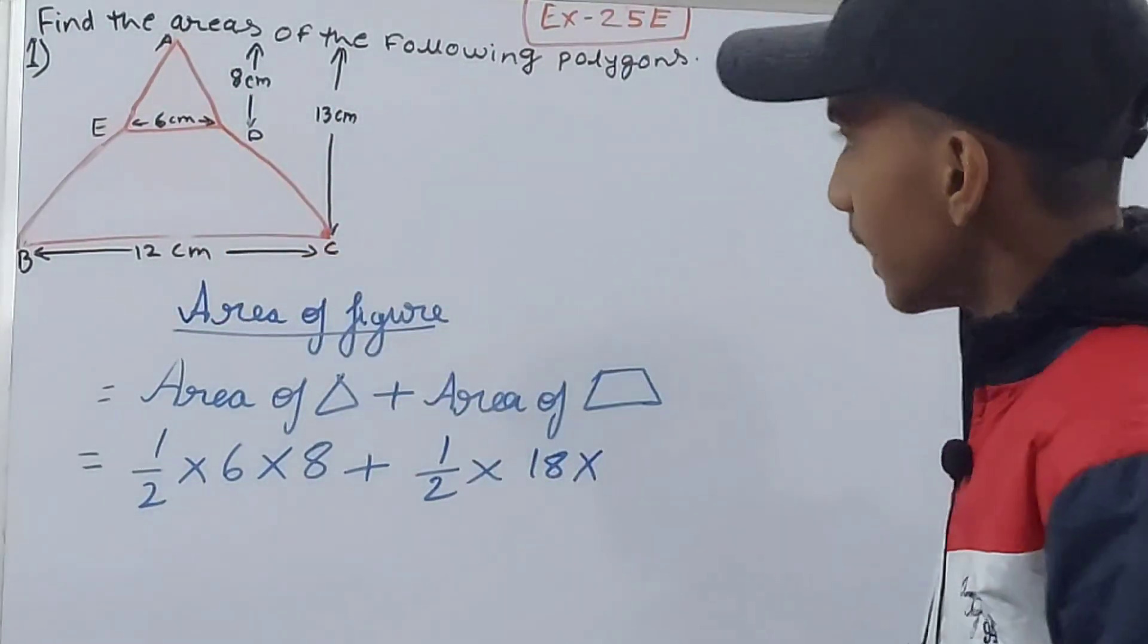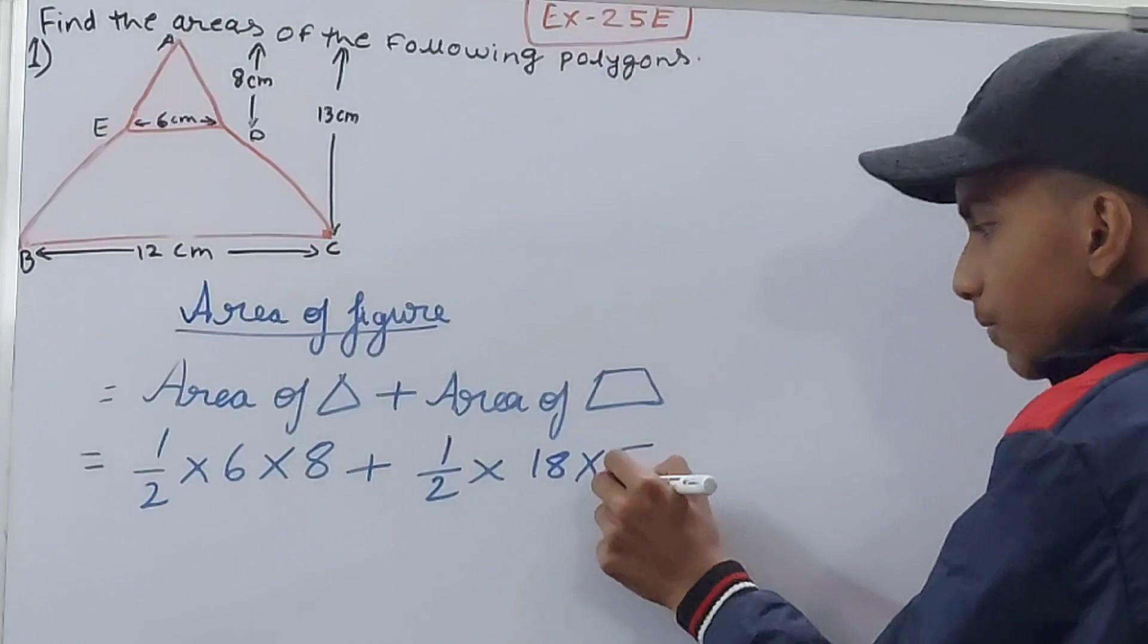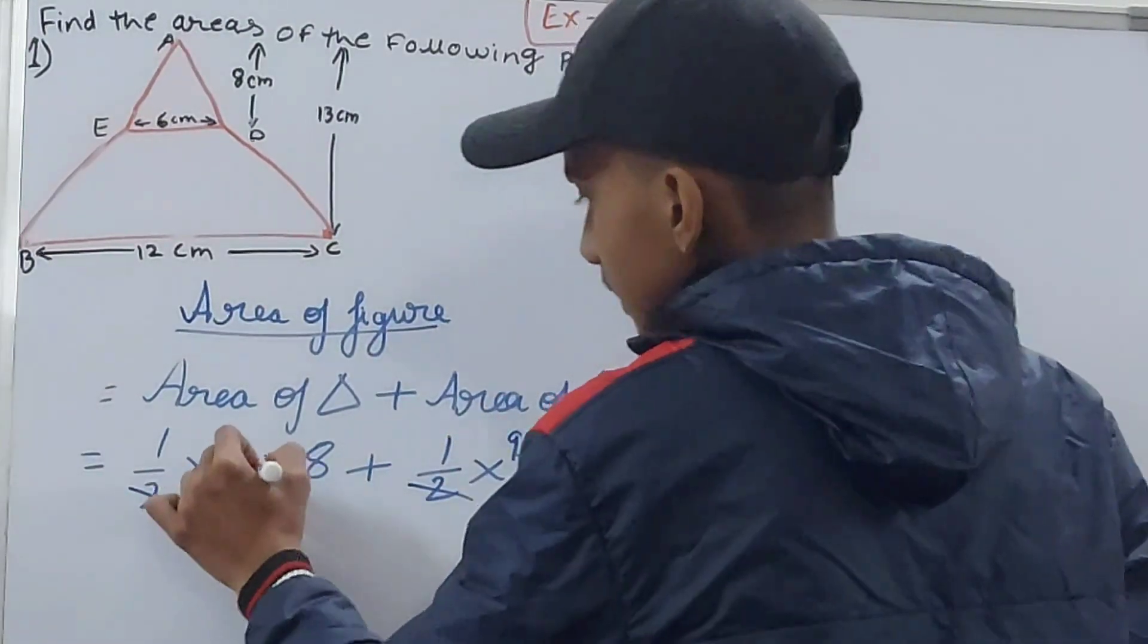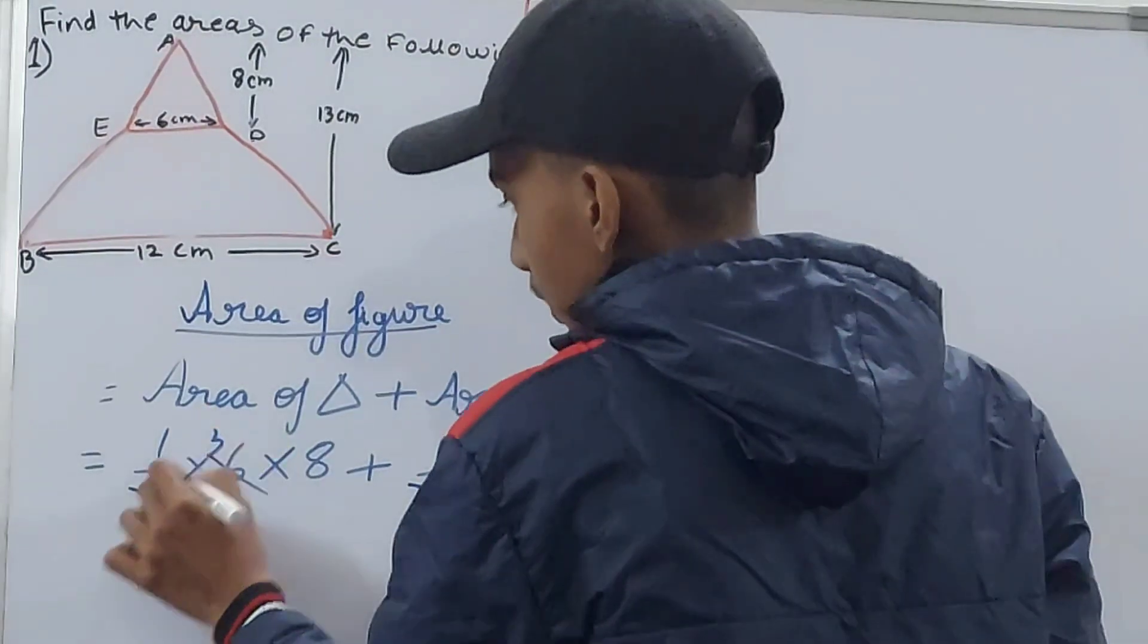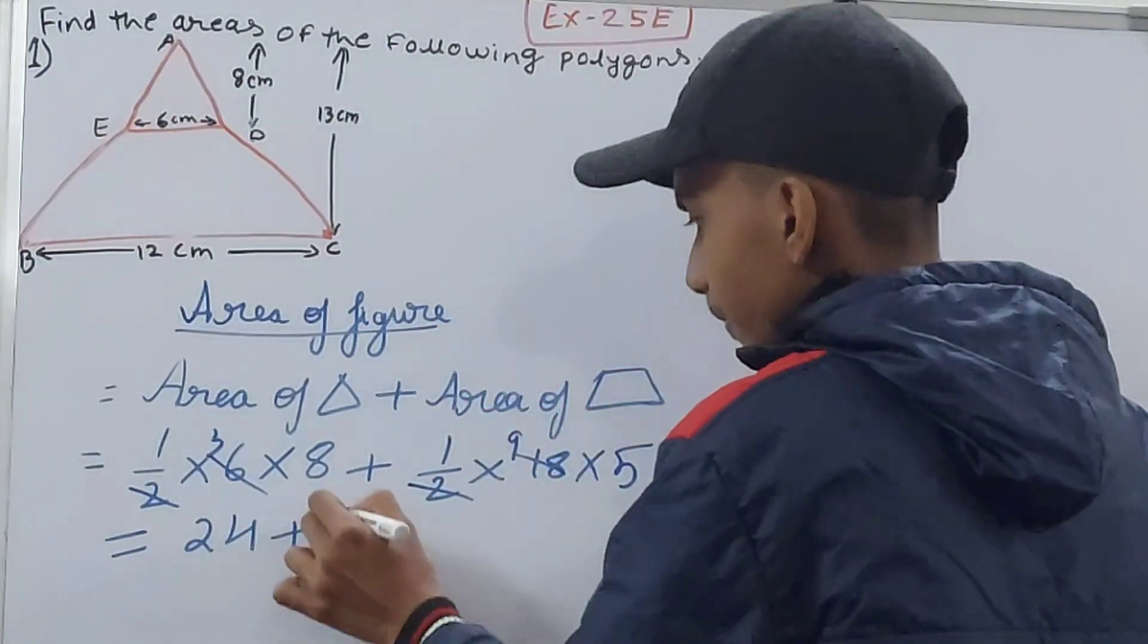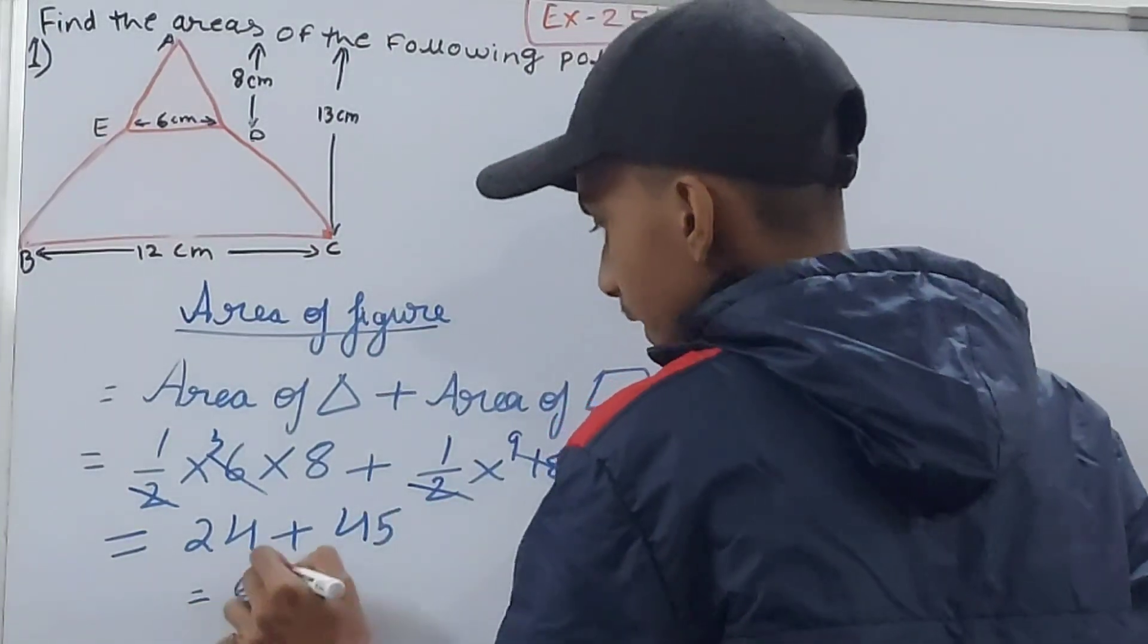Now solve this. You got here 24, here let's cancel. So this will be 24 plus 9 into 5, 45. That's 69 square centimeters. That's your answer for the area.